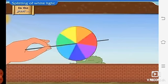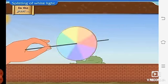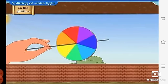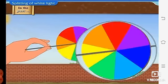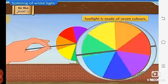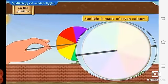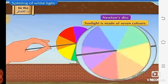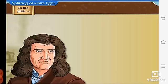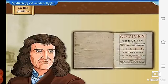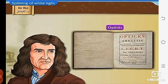The disc was fitted on a stand and rotated fast. As the disc rotated, the seven colors disappeared and only white was seen. This proved that sunlight is made up of seven colors. That is why the disc is known as Newton's disc. Newton wrote a book called Optics about light.